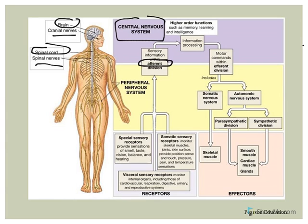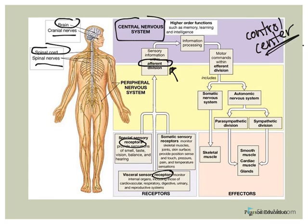Once that information gets to the spinal cord and brain, there will be interpretation of those sensory impulses and decisions will be made. Talking about homeostatic balance and reflexes, the central nervous system is considered the control center. This integrative function takes place within the CNS — it processes the input and figures out the appropriate response. Structures referred to as interneurons will be part of that, and we'll look at those in a later recording.